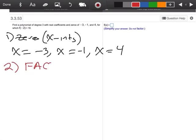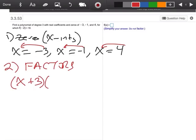Okay, so number two, now we're going to write out our factors. So remember, I'm going to bring each of these values over so that I can write them as factors. So this will be x plus 3, x plus 1, and x minus 4.